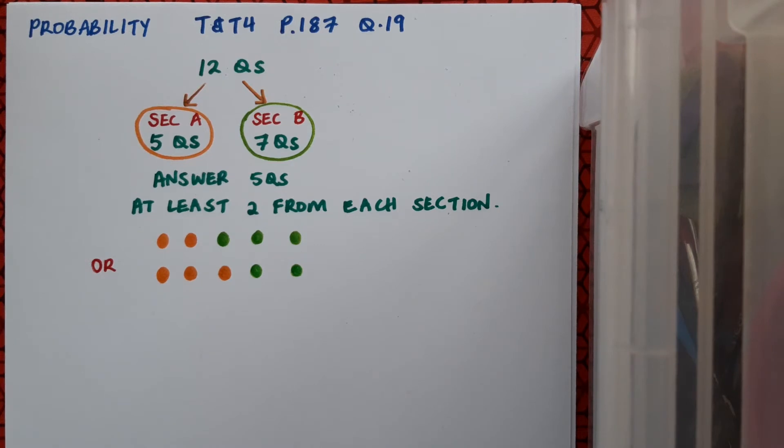I can't answer more than three from section A because if I chose four questions from section A, I'd only have one from section B, and I have to have at least two. So these are the only two viable possibilities: two from section A and three from section B, or three from section A and two from section B.